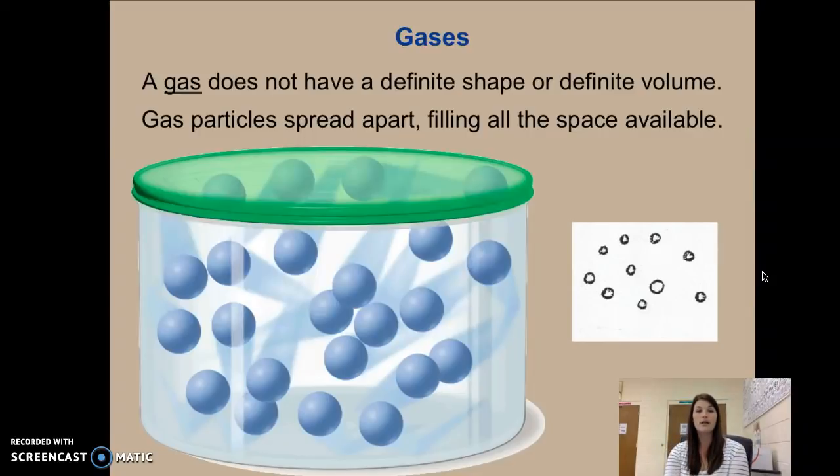Our last state of matter is gases. A gas does not have a definite shape or a definite volume. Gas particles spread apart and they fill all the space that is available. Often gases are a lot of times colorless and odorless. You cannot see them but they are all over the place. The air you breathe and you're sitting in a room right now is filled with gases, primarily nitrogen, also oxygen and a bunch of other little gases in there. But gases are made, even though they are invisible, of tiny little particles. These particles have so much energy. They are bouncing around crazy. They do not want to be close to each other whatsoever.